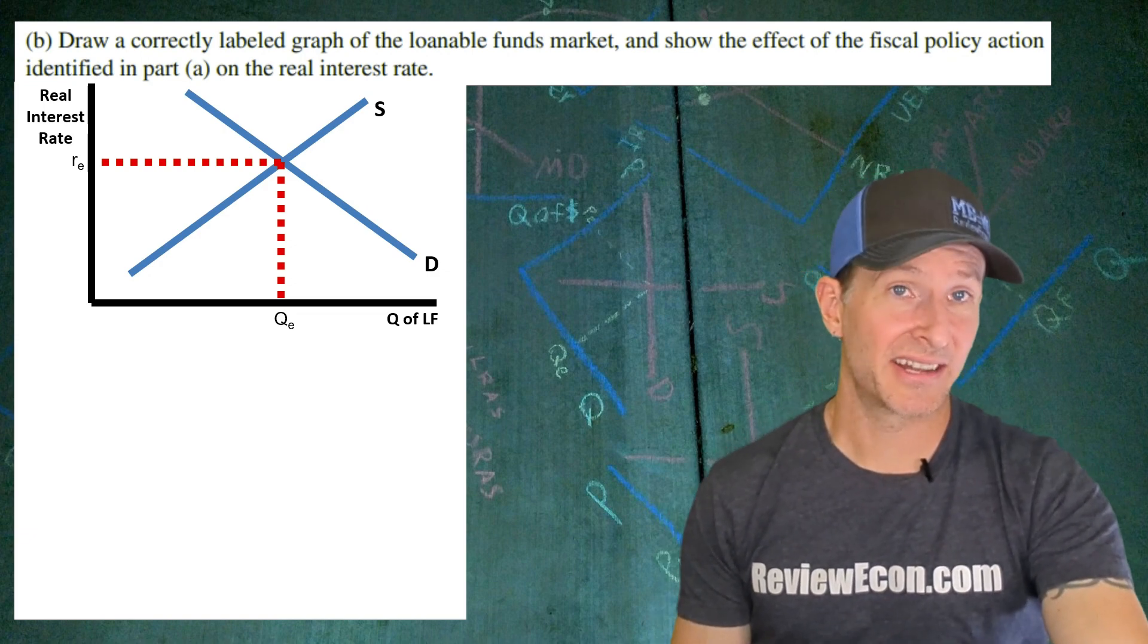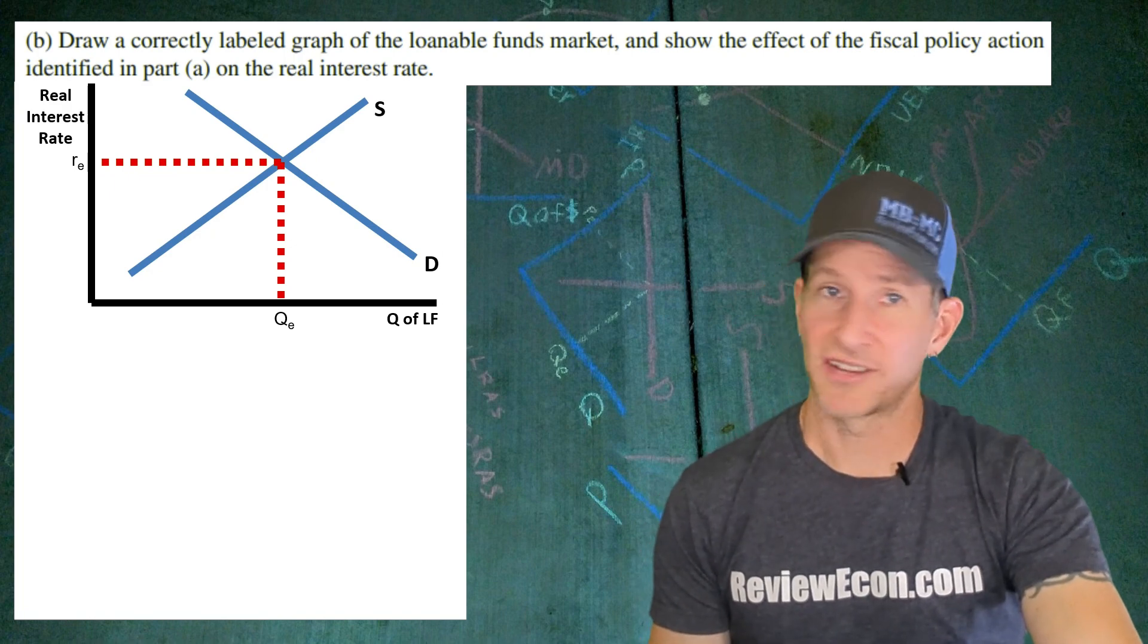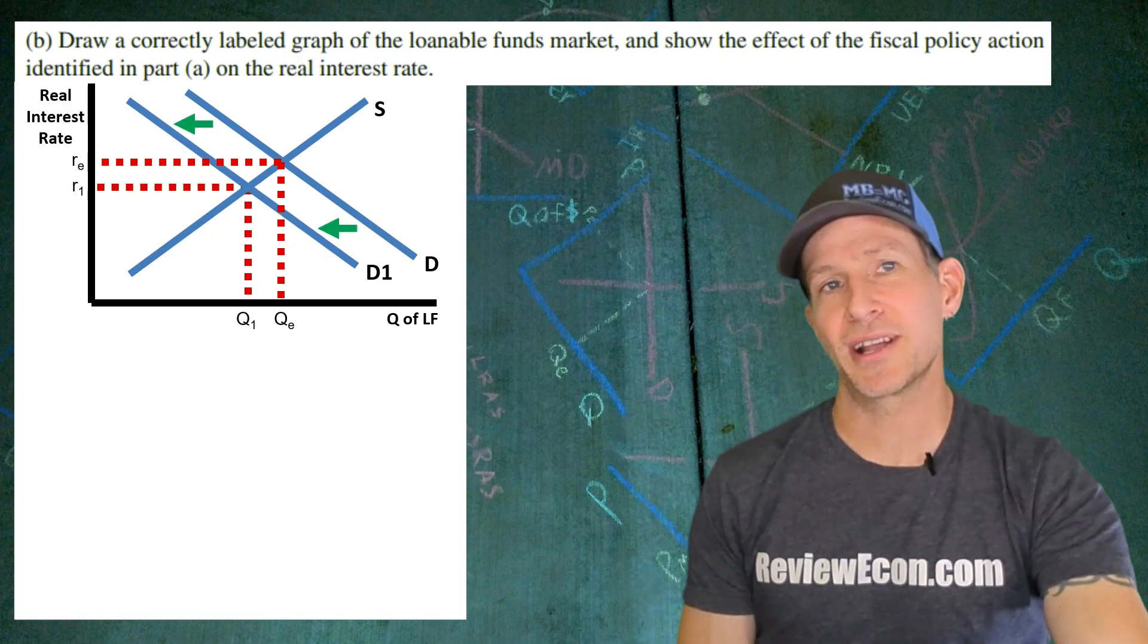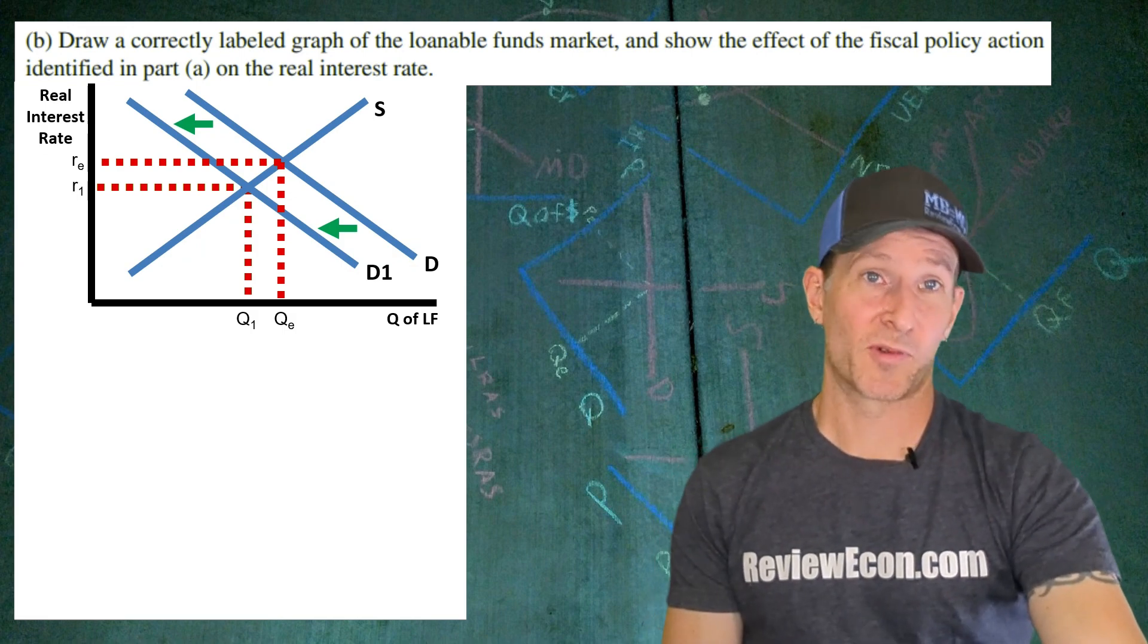And if the government decreases the national debt, that means the government will be demanding fewer loans. So let's shift that demand curve to the left and show the impact on the real interest rate, which is a decrease in that real interest rate, as well as a decrease in the equilibrium quantity of loanable funds.